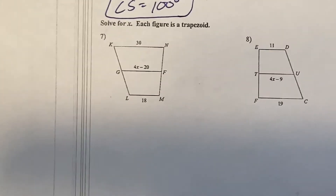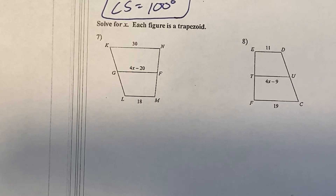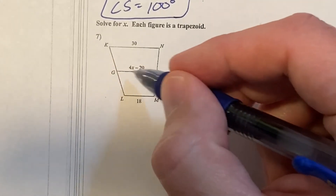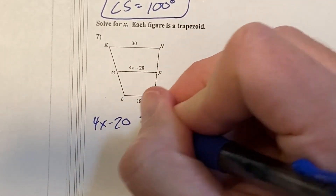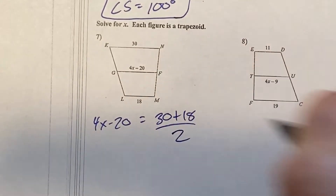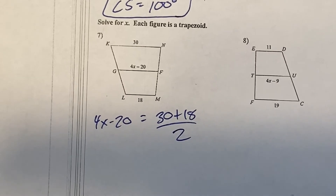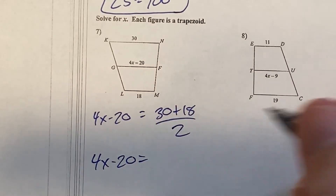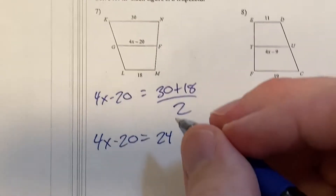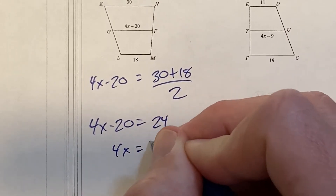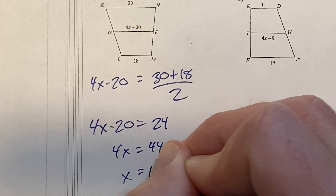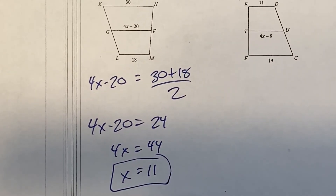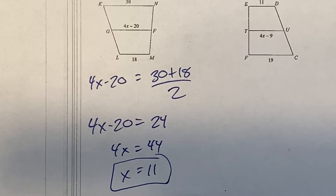Let's look at a mid-segment problem — solve for x, each figure is a trapezoid. The mid-segment equals the average of the top and the bottom. So 4x minus 20 equals the average of the two bases. Adding the numbers: 48 divided by 2 is 24, then add 20 to get 4x equals 44, divide by 4, x equals 11. Push pause and try numbers 2, 4, 6, and 8.